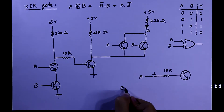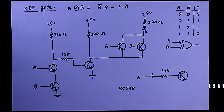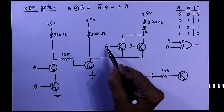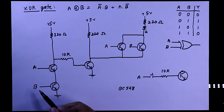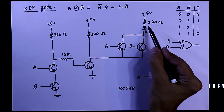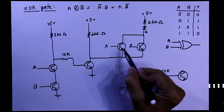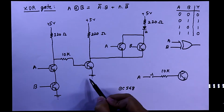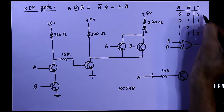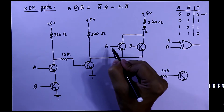Now we'll see the working of this circuit. When both inputs are zero — A is zero and B is zero — all four transistors are working as open circuits, so there is no chance for the LED to glow. The negative pin of the LED is disconnected from ground because the transistors are open, so the output is zero.